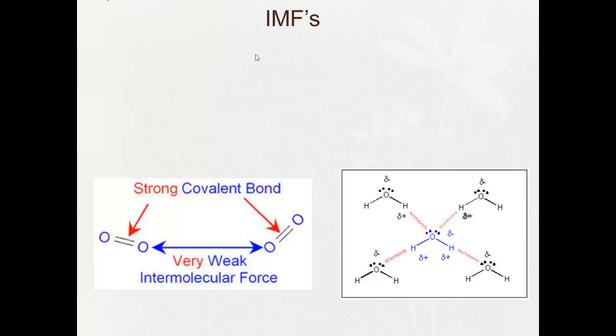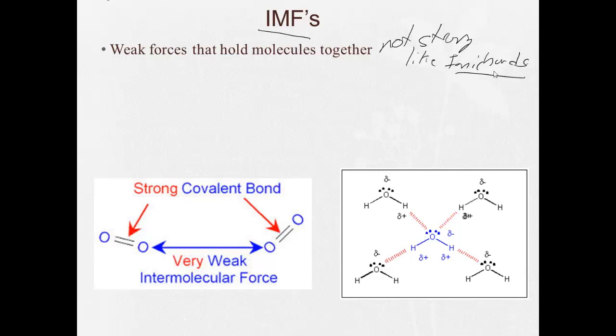Short for intermolecular forces is IMF. So when I'm writing this on the board or whatnot, I'll just be writing IMFs. These are the weak forces that hold molecules together. They're not strong like ionic bonds. They're not intramolecular forces because they're actual chemical bonds, but they're very strong. These intermolecular forces are relatively weak. Covalent bonds are strong. Intermolecular forces are weak.